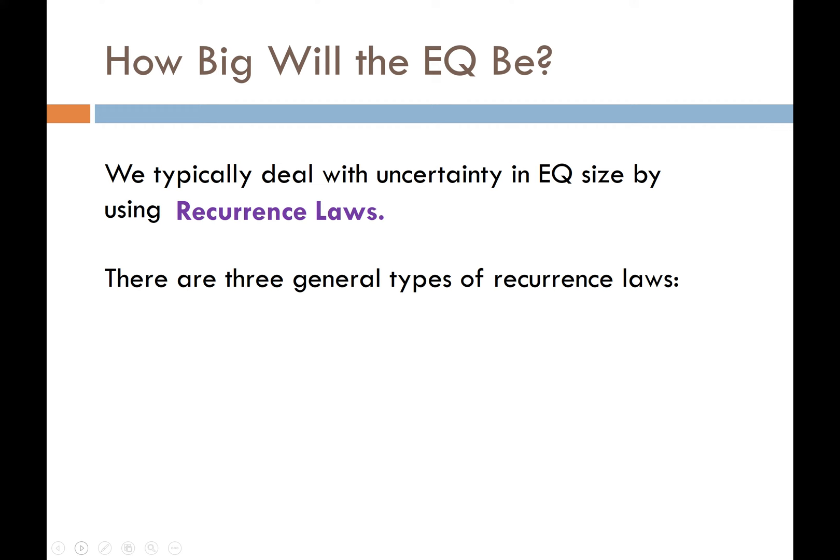When we say recurrence, we think about how often something will repeat itself or occur again and again. What we're talking about with that repetition is earthquake magnitude — how often will an earthquake magnitude repeat itself, or in a given year, what is the likelihood of experiencing or exceeding a given earthquake magnitude?